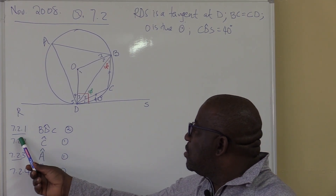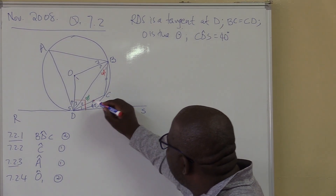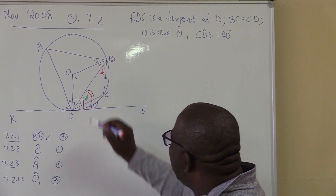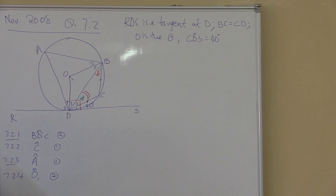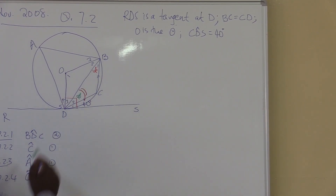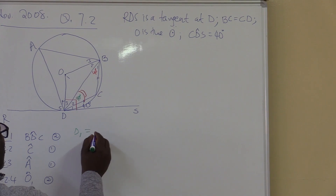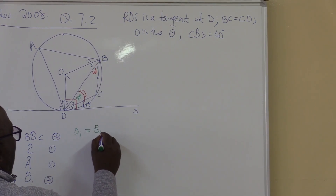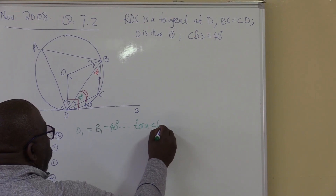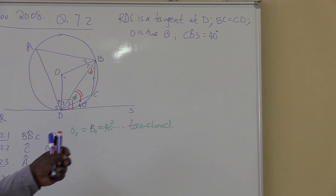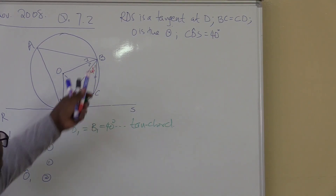First question, 7.2.1: find the size of angle BDC. We're looking for this angle here — we've already found it to be 40 degrees, but let's find it the correct way. Number one, we use the Tan-Chord theorem: angle D1 equals angle B1 equals 40 degrees, because of the Tan-Chord theorem. That is 40 degrees. Once we identify that D1 is the same as B1 via the Tan-Chord theorem, we proceed.